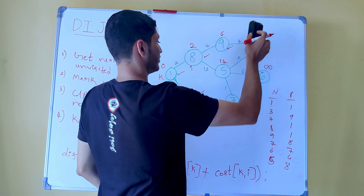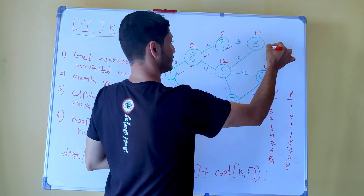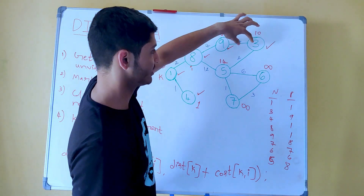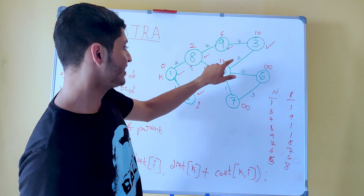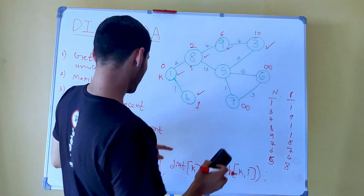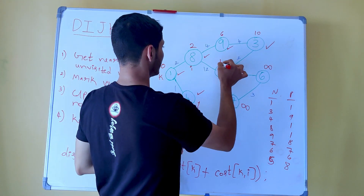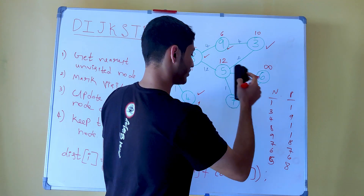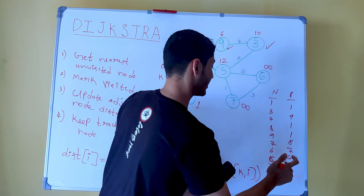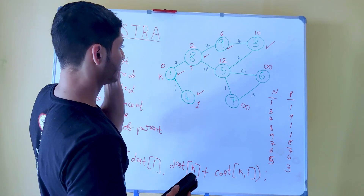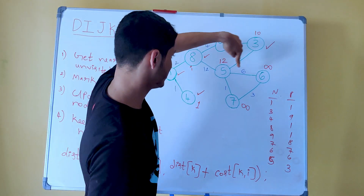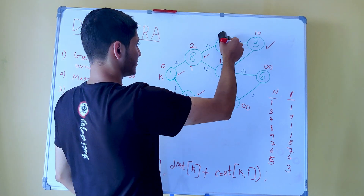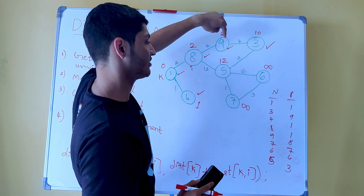We go to node 3, mark it as visited, and look at all its adjacent nodes and update their distances. The new distance to node 5 is minimum of 14 and 10 plus 2, which is 12. Since 12 is less than 14, we update the distance, and we also update the parent table: the parent of 5 is now 3, not 8, because this corresponds to the least cost path. For the other adjacent node, its minimum distance is 6 and won't change.